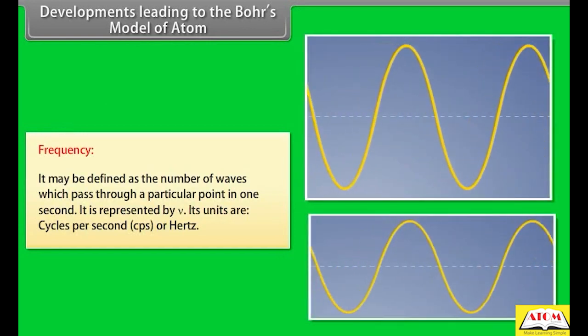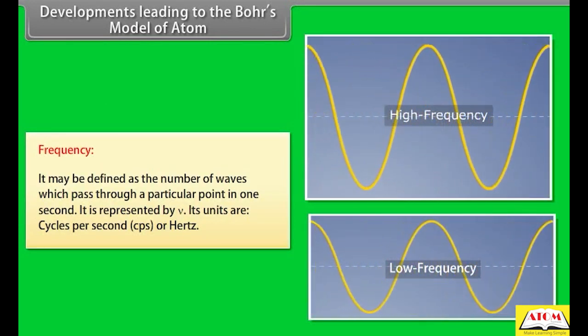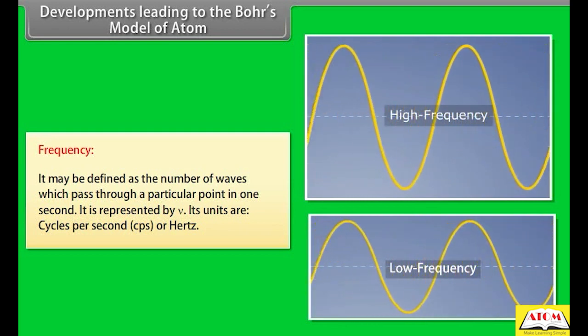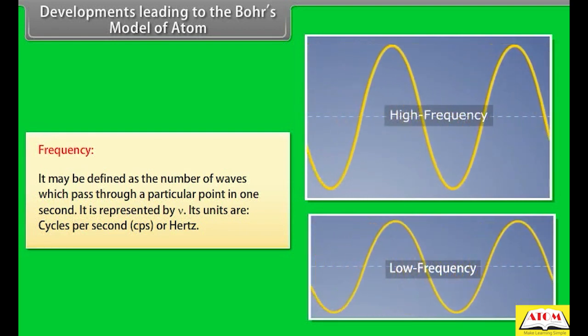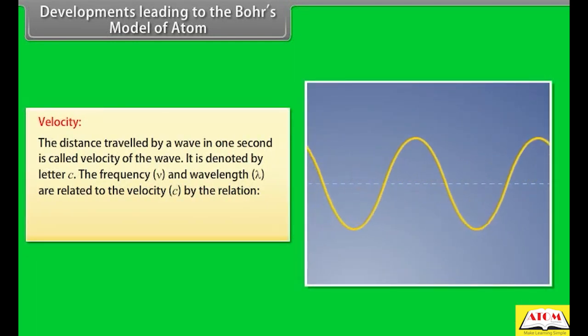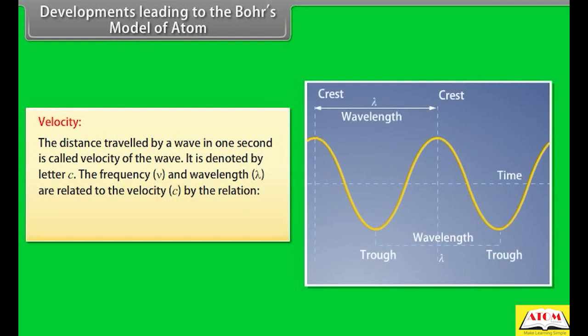Frequency: It may be defined as the number of waves which pass through a particular point in one second. It is represented by nu, and its units are cycles per second or hertz. Velocity: The distance travelled by a wave in one second is called the velocity of the wave, denoted by C. The frequency and wavelength are related to the velocity C by the relation C = nu × lambda. Its unit is meter per second.